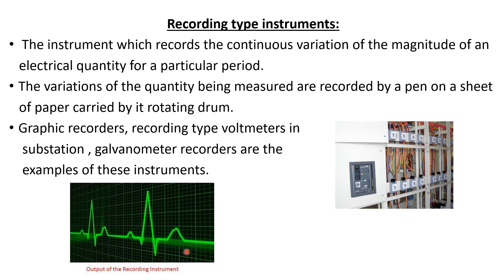ECG is one example of a recording type instrument, but here we are discussing electrical instruments. Generally, graphic recorders, recording type voltmeters in substations, and galvanometer recorders are examples for recording type instruments. Recording type voltmeters are very important in substations because they record the continuous variation of voltage over a period of time, which is very necessary to control the generation of electrical power. These are the major things about analog type electrical measuring instruments: indicating, integrating, and recording types.